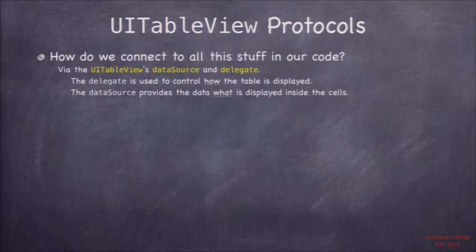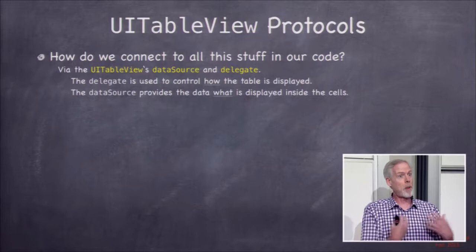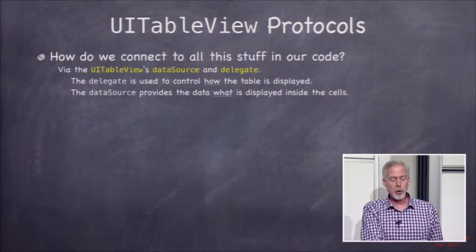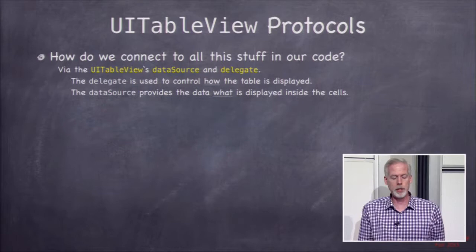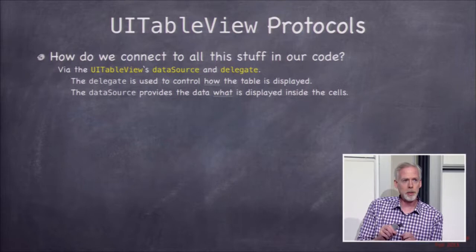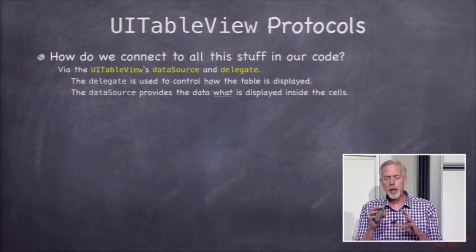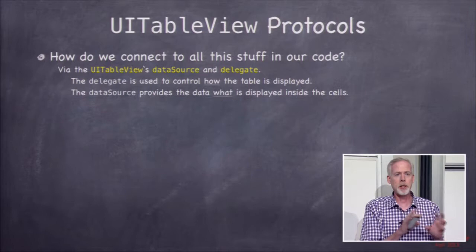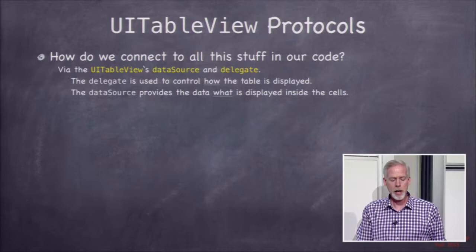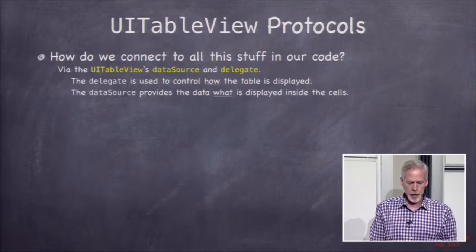Let's talk about the two really important protocols: the data source and the delegate. The data source protocol — UITableViewDataSource — is about the contents of the table, the data coming out of our database. It's displaying our model; the controller uses it to bring model data into the table view. The delegate — UITableViewDelegate — is about how the table is displayed: how we arrange things, what views we use for headers and footers, and reacting to touches.